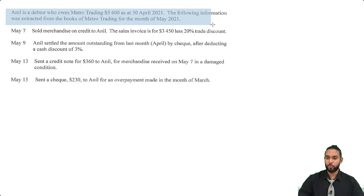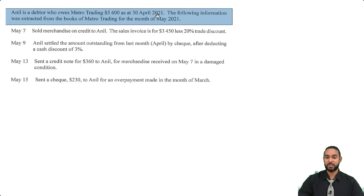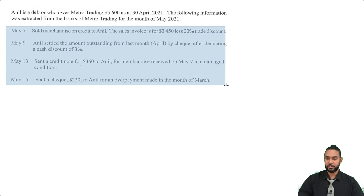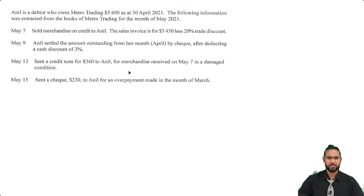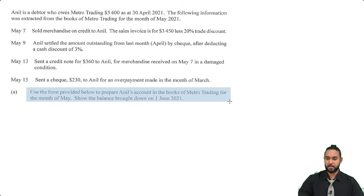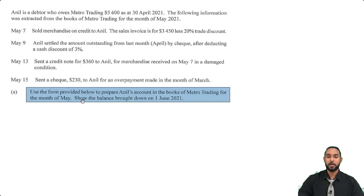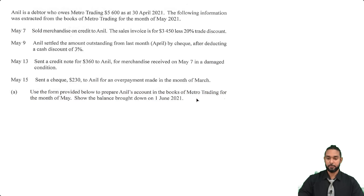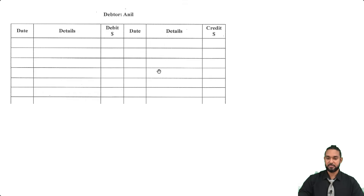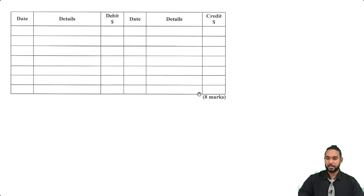So let's take a read of the information. Anil is a debtor who owes Metro Trading 5,600 as at 30th April 2021. The following information was extracted from the books of Metro Trading for the month of May 2021. We have four transactions, but before we read through them let's take a look at what they want us to do: prepare Anil's account in the books of Metro Trading for the month of May, and show the balance brought down on June 1st 2021. They've given us a T-account for Anil, and it's eight marks.